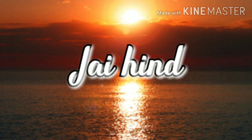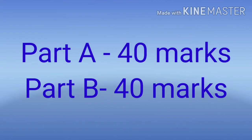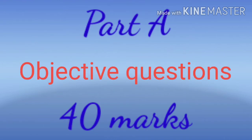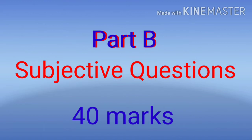Through this video I am going to discuss the changes in the question pattern in English for class 10 in the academic year 2020-2021. The whole question paper is divided into two parts: Part A and Part B. Part A is for 40 marks and Part B is for 40 marks, total 80. Part A contains only objective questions for 40 marks, and Part B contains subjective questions for 40 marks.